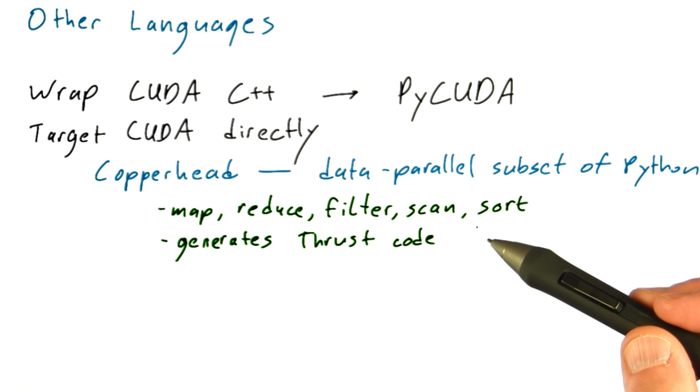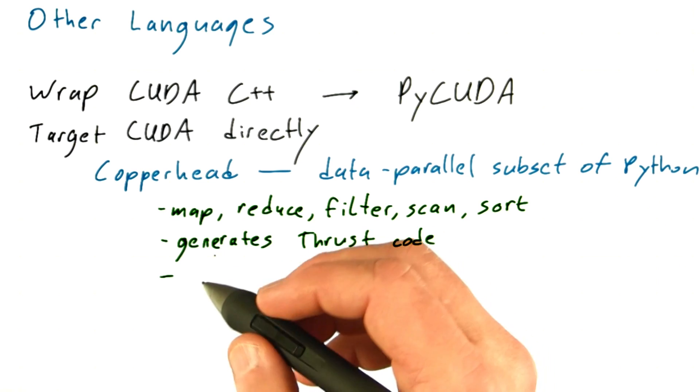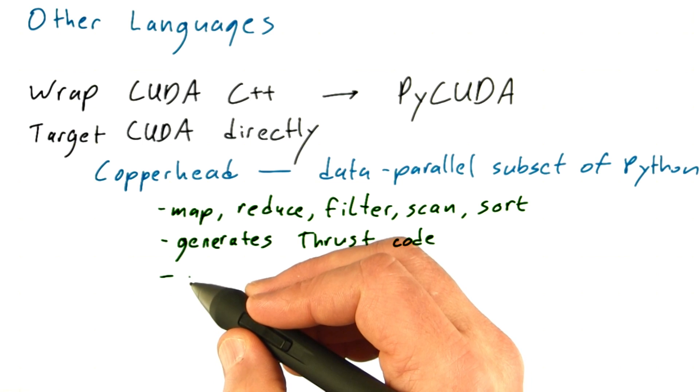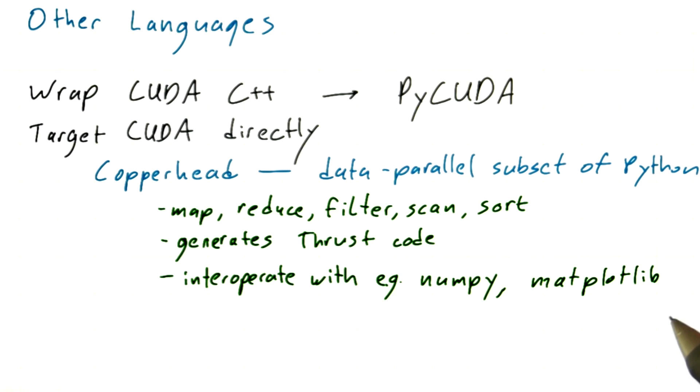Memory is managed by the Python garbage collector and lazily transferred to and from the GPU. A cool thing about Copperhead programs is that they interoperate with Python programs using packages like NumPy or Matplotlib. This makes it easy to write entire applications and not just kernels.